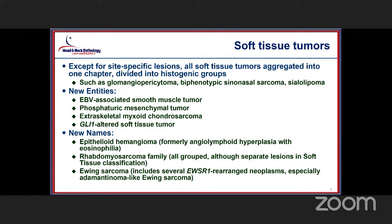Something like a leiomyoma or a lipoma can occur anywhere within the head and neck space, and yet they are being aggregated into this chapter. Several new entities were included: the EBV-associated smooth muscle tumor, phosphaturic mesenchymal tumor, extraskeletal myxoid chondrosarcoma, and the GLE-1 altered soft tissue tumors. Updates to some other names were also incorporated into this chapter.